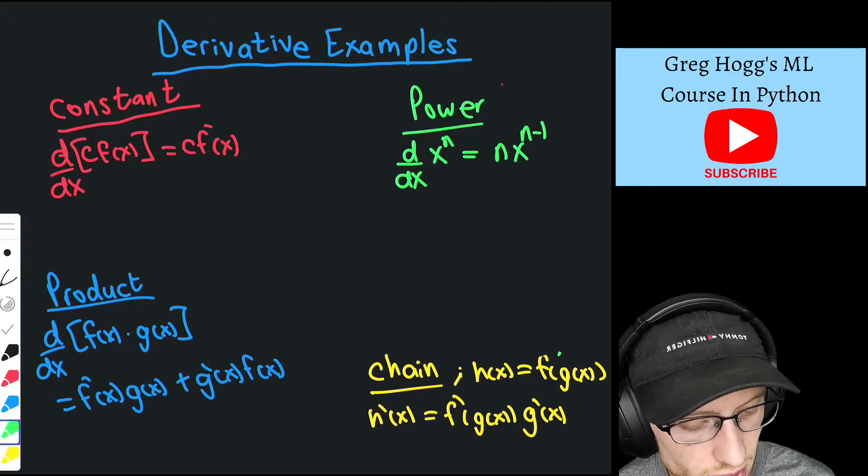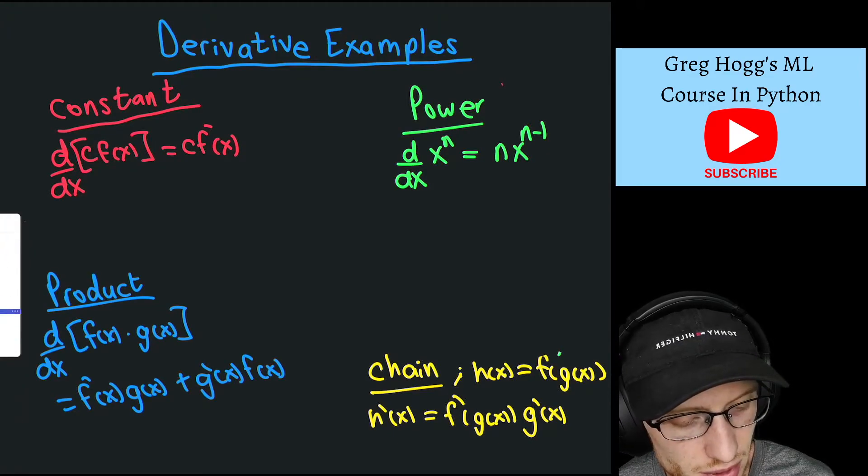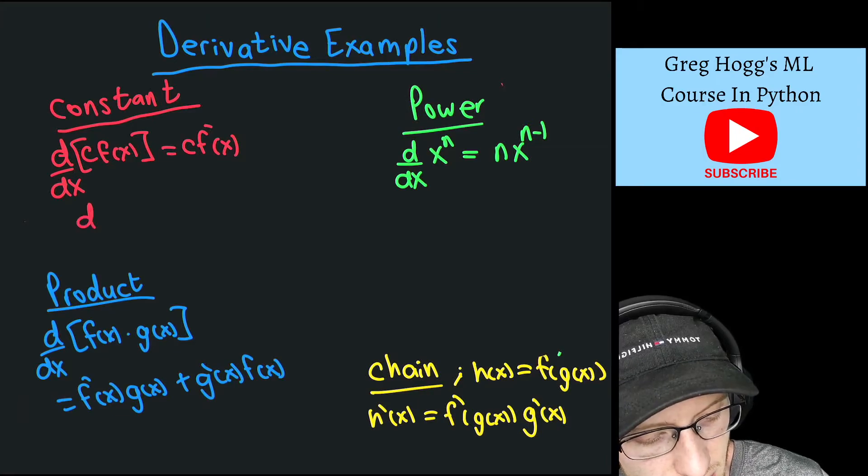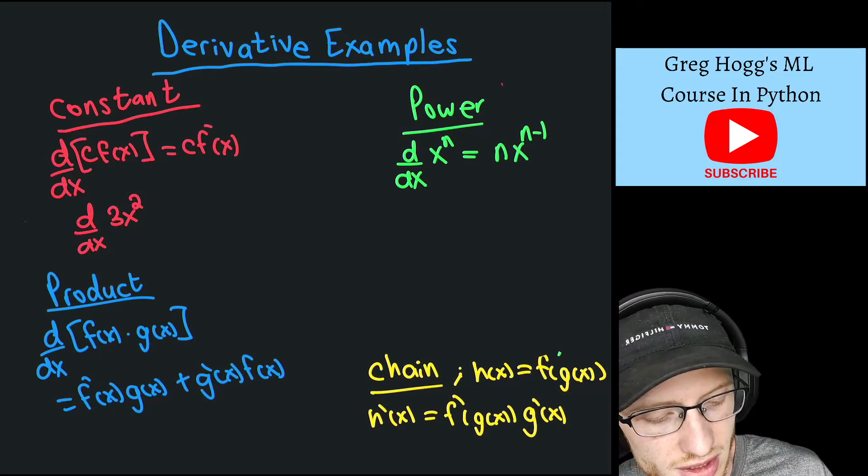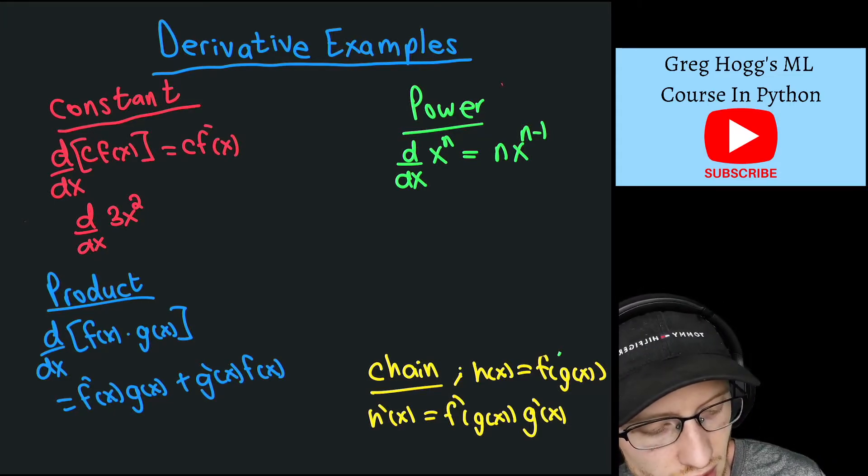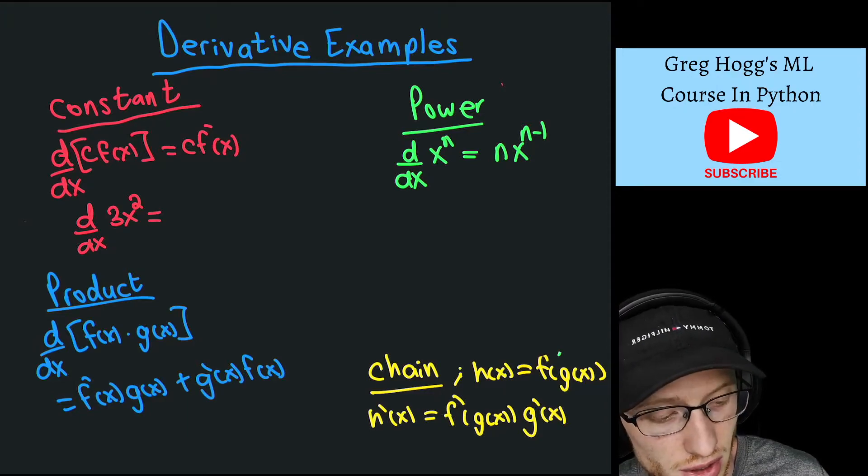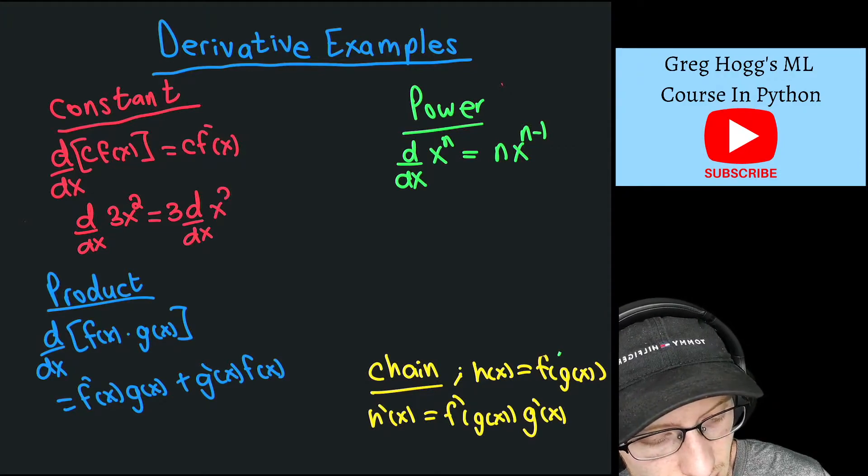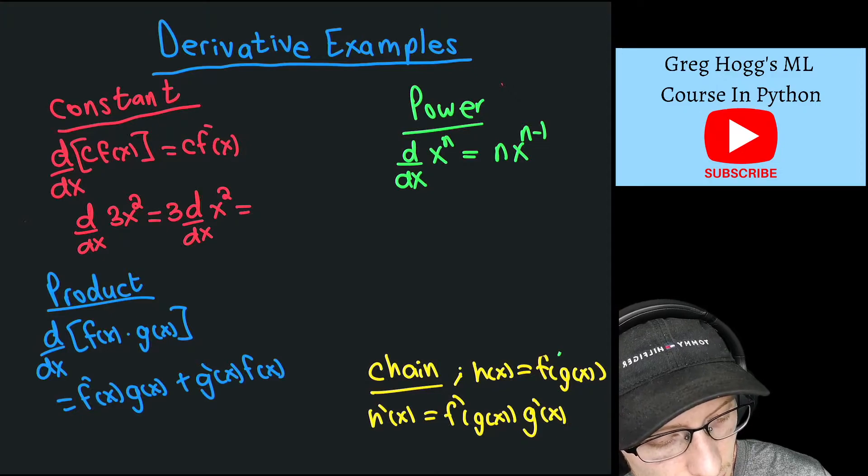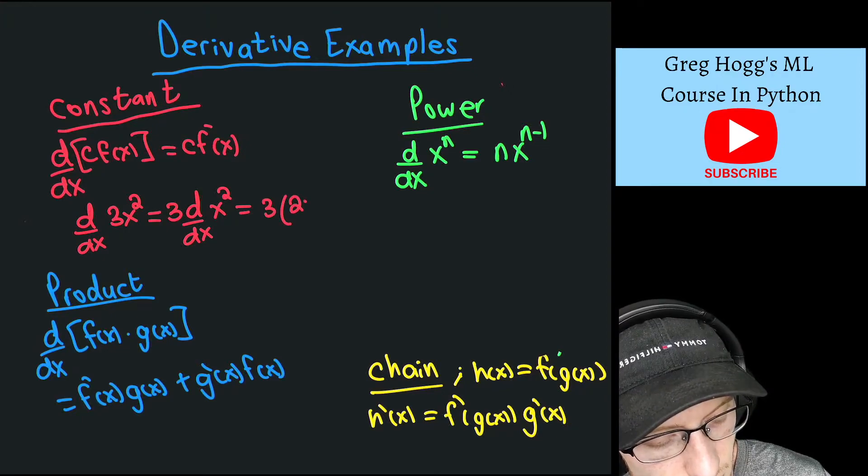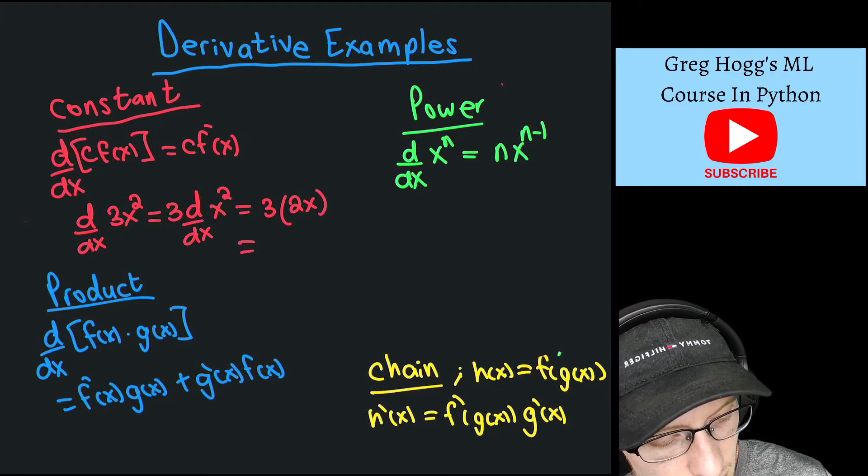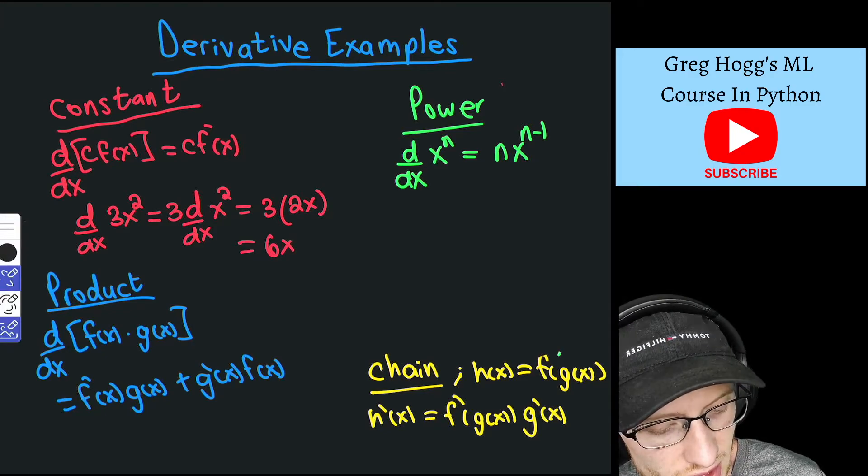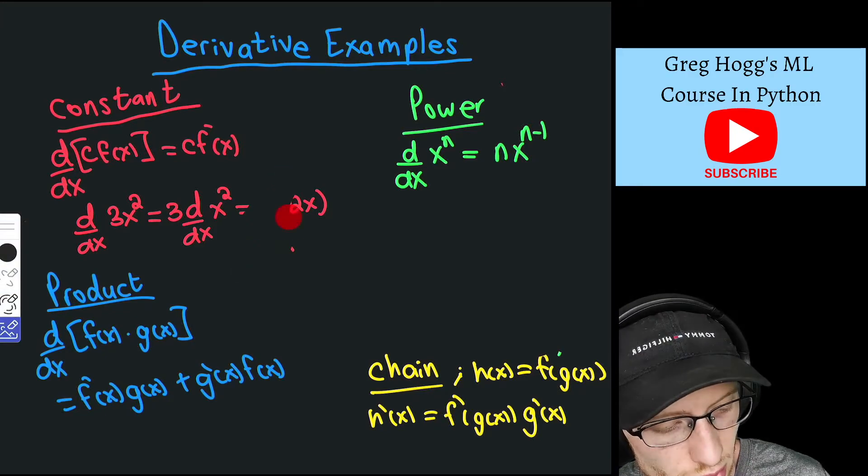Now we're going to use the constant rule a little bit. So the constant rule is a very simple one, it's just saying d/dx of, say, 3x squared. Well, we know how to take the derivative of x squared, and so that's equal to, well, using the constant rule, it's 3 times d/dx of x squared, which is simply equal to 3 times 2x, which is equal to 6x. And that's really all the constant rule is ever going to do.